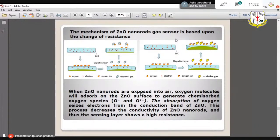This process decreases the conductivity of zinc oxide nanorod. Thus the sensing layer shows high resistance. That is how we sense whatever the gas - it can be used for hydrogen sensing, gas hydrogen gas sensor, even methanol.